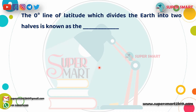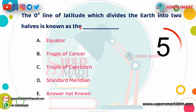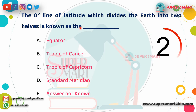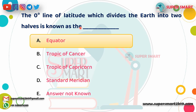Next question: The zero-degree line of latitude which divides the Earth into two halves is known as what? Answer is the Equator.